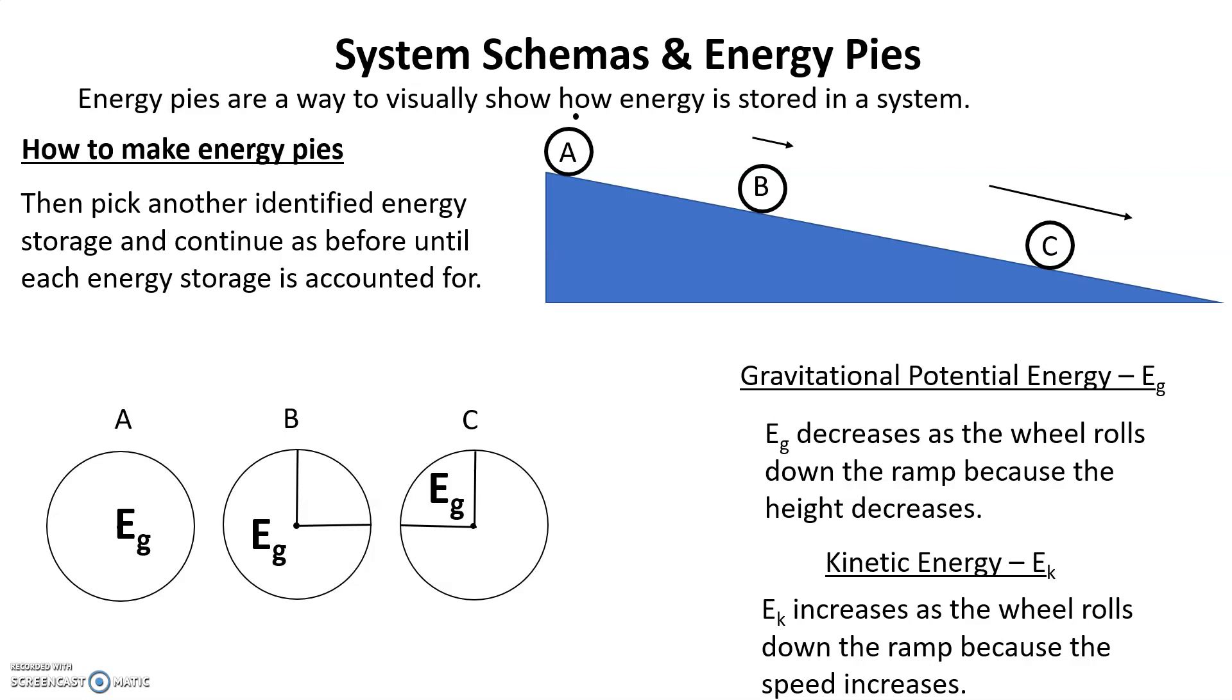Then we pick another identified energy storage and continue as we did before until each energy storage is accounted for. In this case, there were only two energy storages. So that means the remainder part of the pie must be the other energy storage. So in B, that remainder of the pie must be EK. And then in C, where it's a lot faster, that big section of pie that's not labeled must be EK.